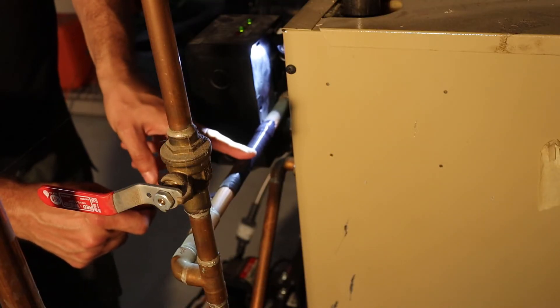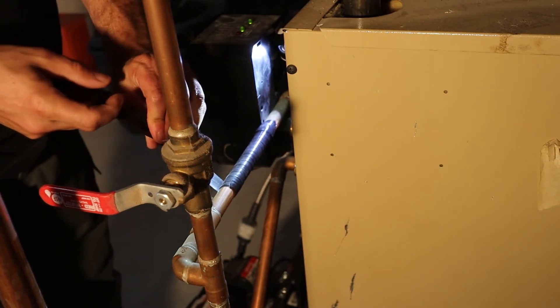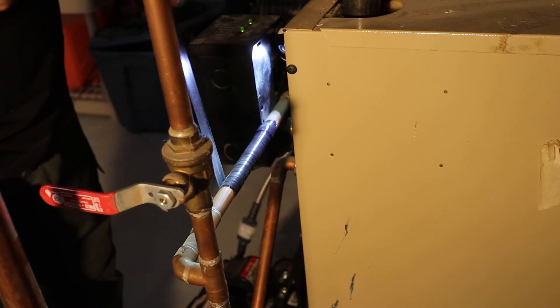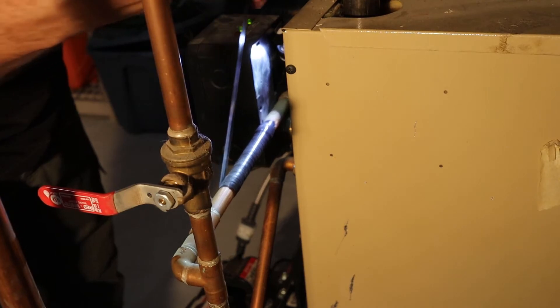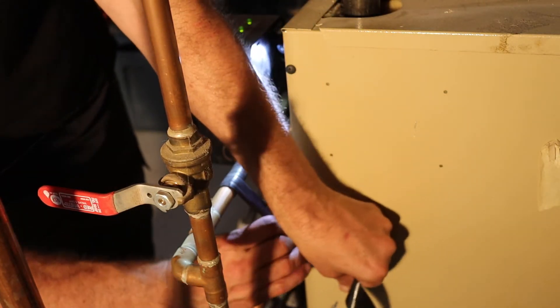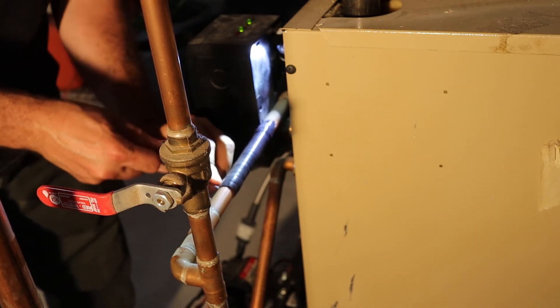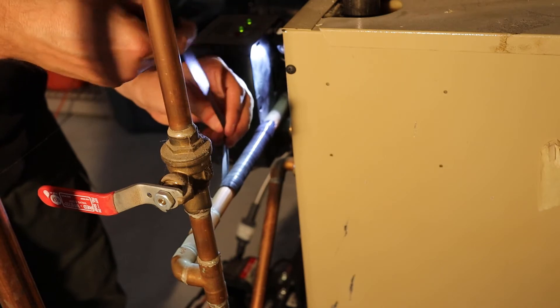Now while this first wrap sets up, I'm actually going to wrap a second layer around here in the opposite direction to see if that adds some strength to the repair. This may be overkill for a copper pipe like this, but I don't know. I've got enough tape and I figure we might as well just try it.